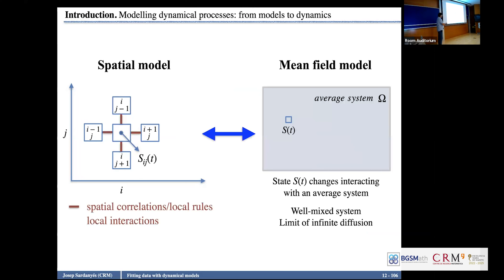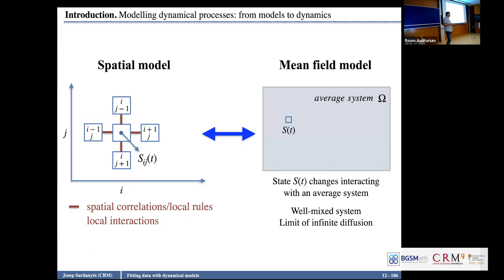We can study both the spatial model and the mean-field model and look for differences, because space introduces differences. Usually, the fundamental mechanisms in terms of phase transitions, bifurcations, and transients — the mean-field model gives a lot of information. But it is true that space can introduce novel phenomena, and this has been very well studied in physics.